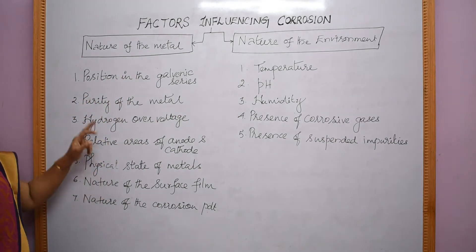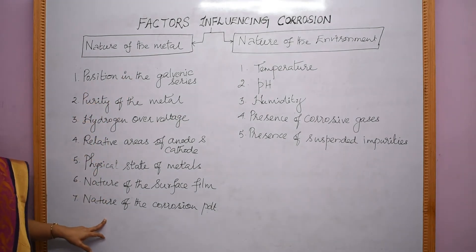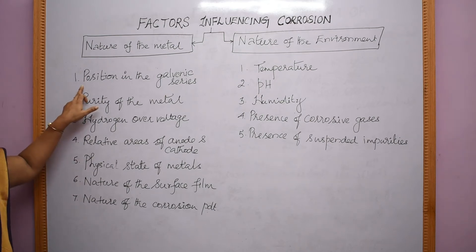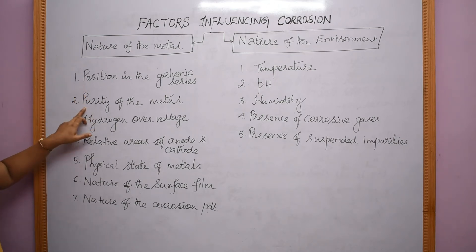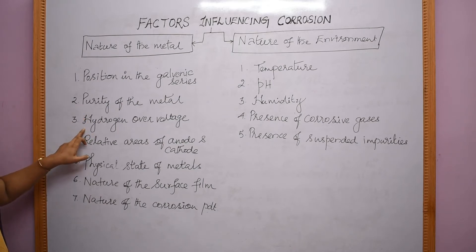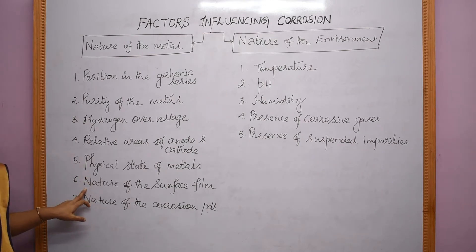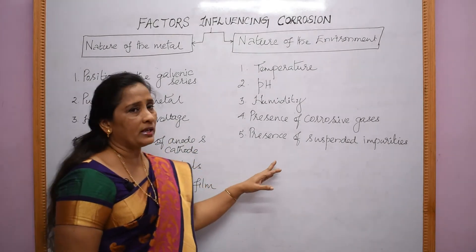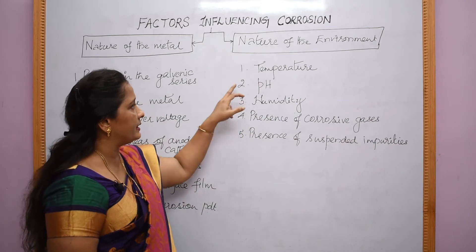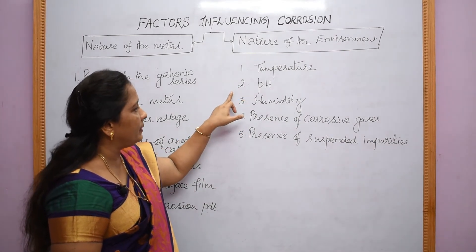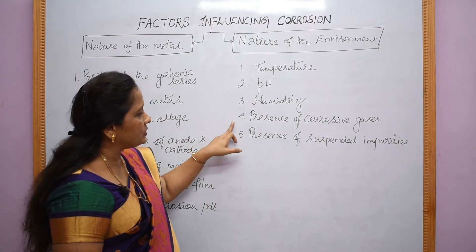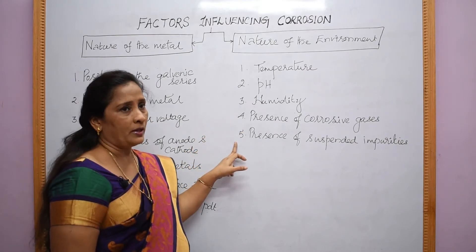Under nature of the metal, we are going to discuss about seven points. The first one is the position in the galvanic series, number two is purity of the metal, number three is hydrogen overvoltage, number four is relative areas of anode and cathode, number five is physical state of metals, number six is nature of the surface film, and number seven is nature of the corrosion product. Under nature of the environment, we will discuss factors such as temperature, pH, humidity, presence of corrosive gases, and presence of suspended impurities.